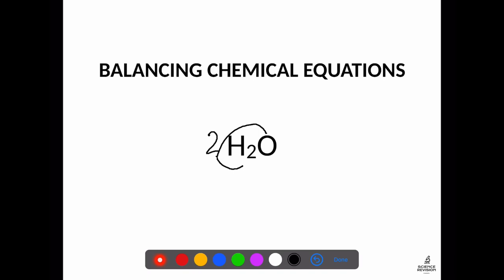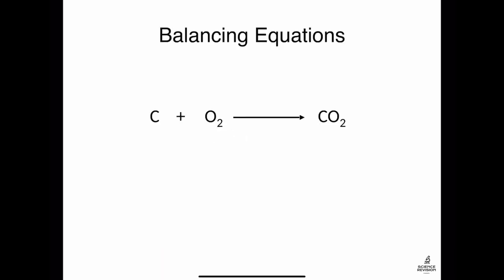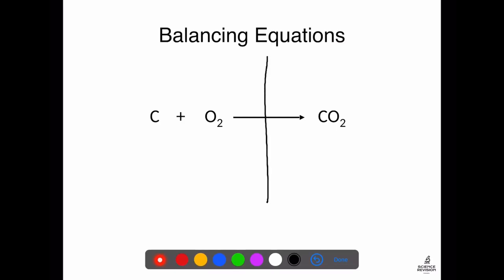You can only stick numbers in front — you can't stick them behind. The trick in balancing equations is that we have to make sure we have the same number of each type of atom on either side of the arrow. I've drawn a line down the middle of the arrow to show that we need the same number of atoms on the left side as on the right side.